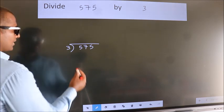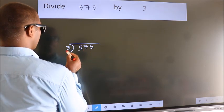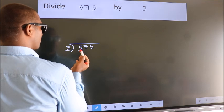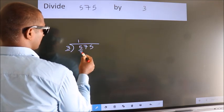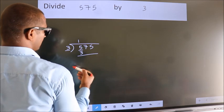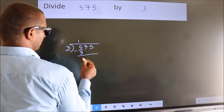Next. Here we have 5, here 3. A number close to 5 in 3 table is 3 ones 3. Now, we should subtract. We get 2.